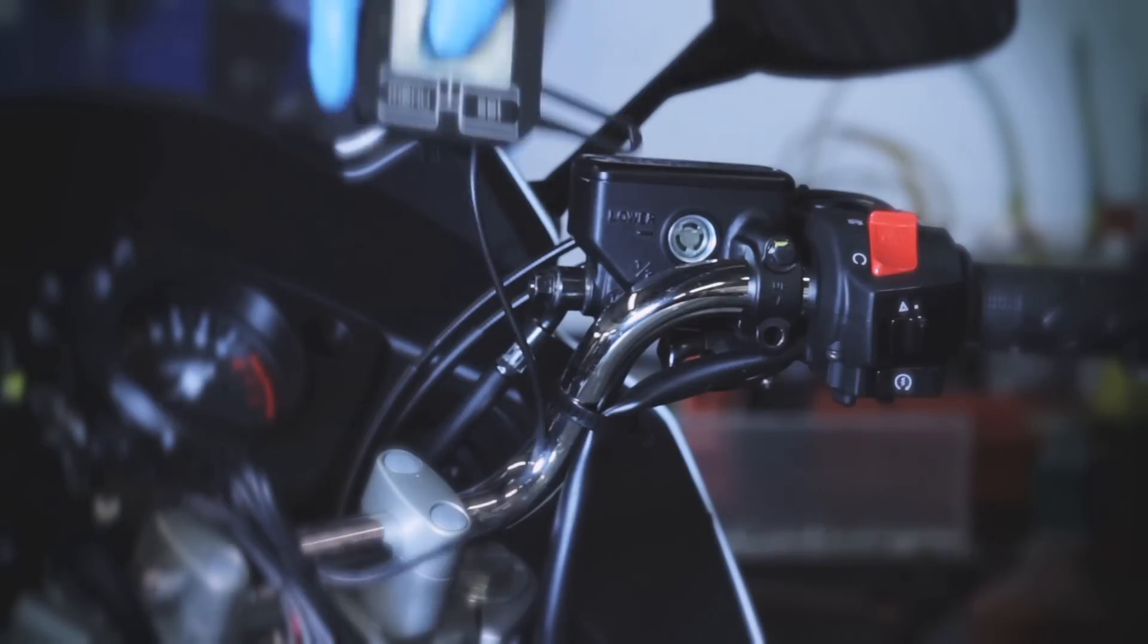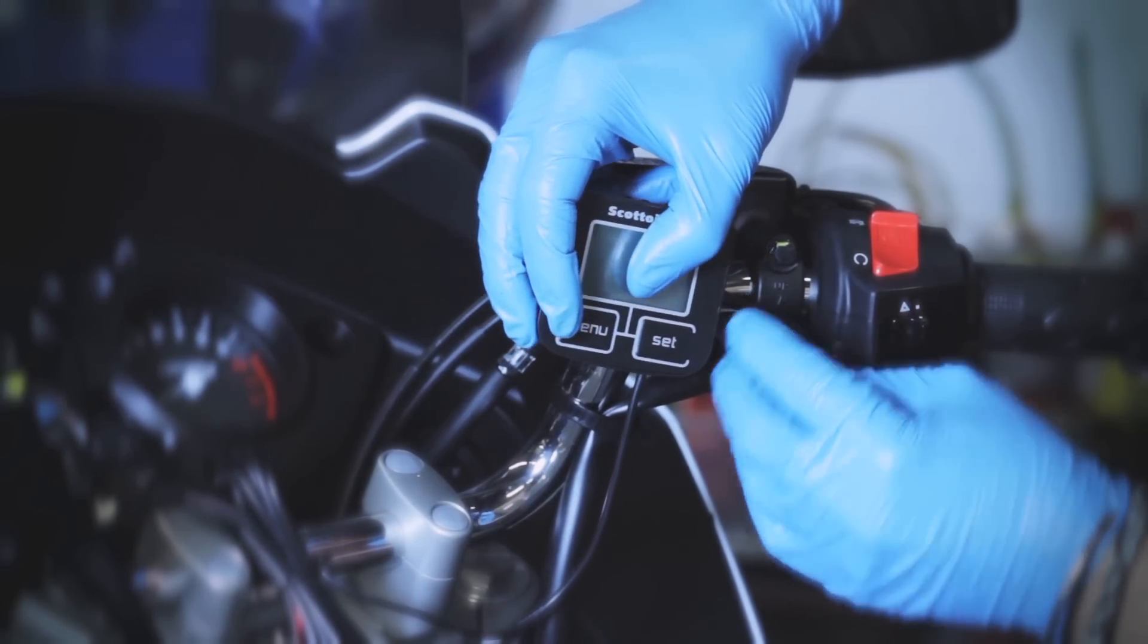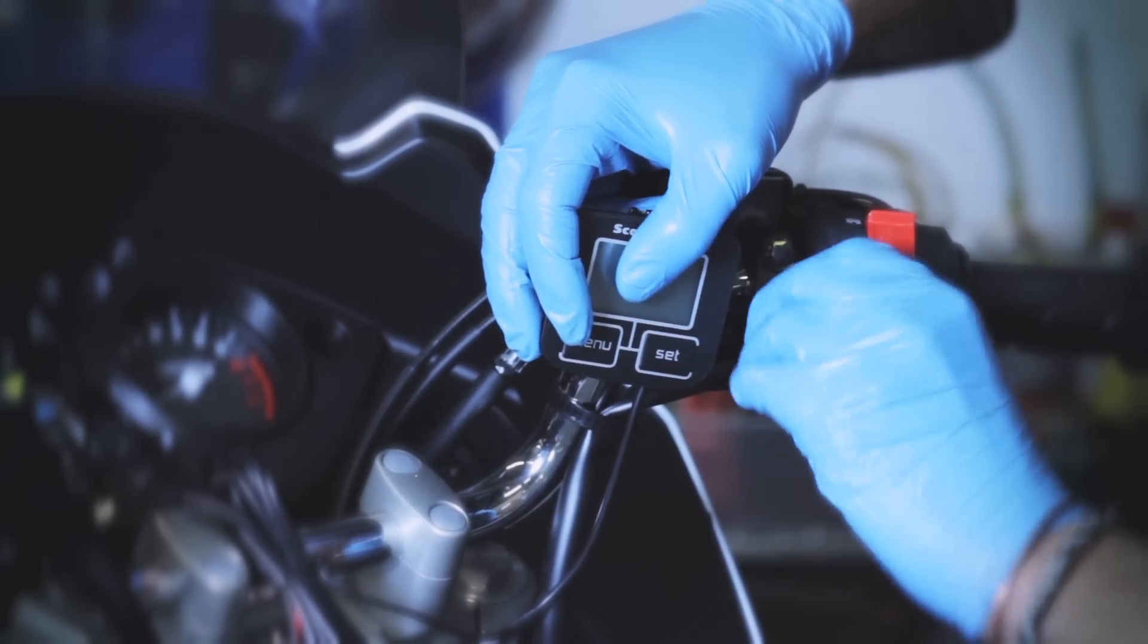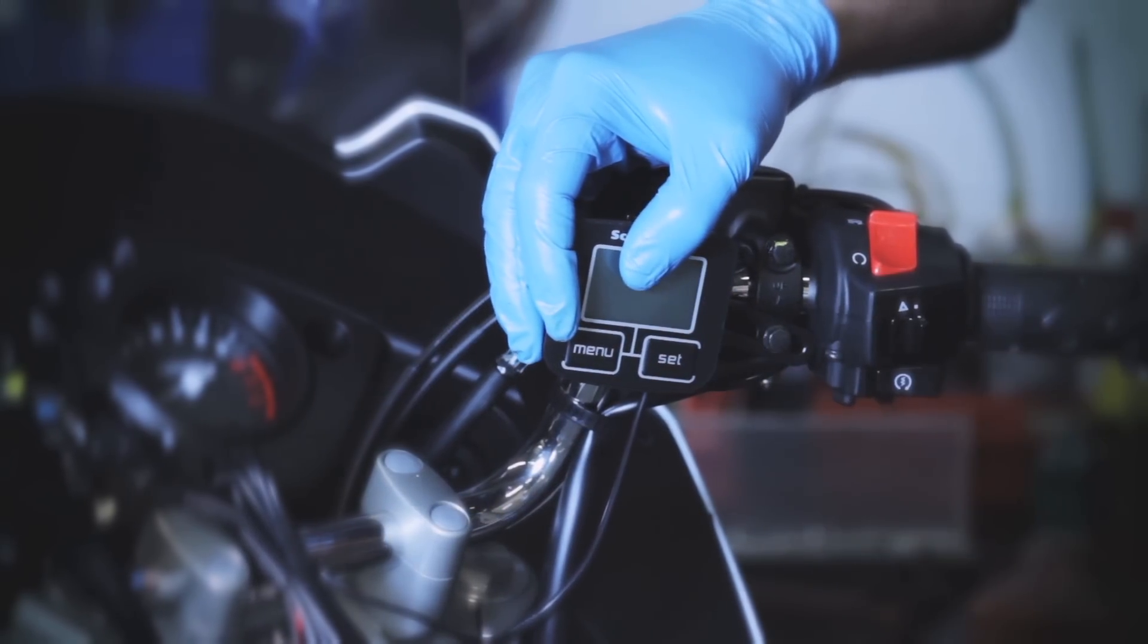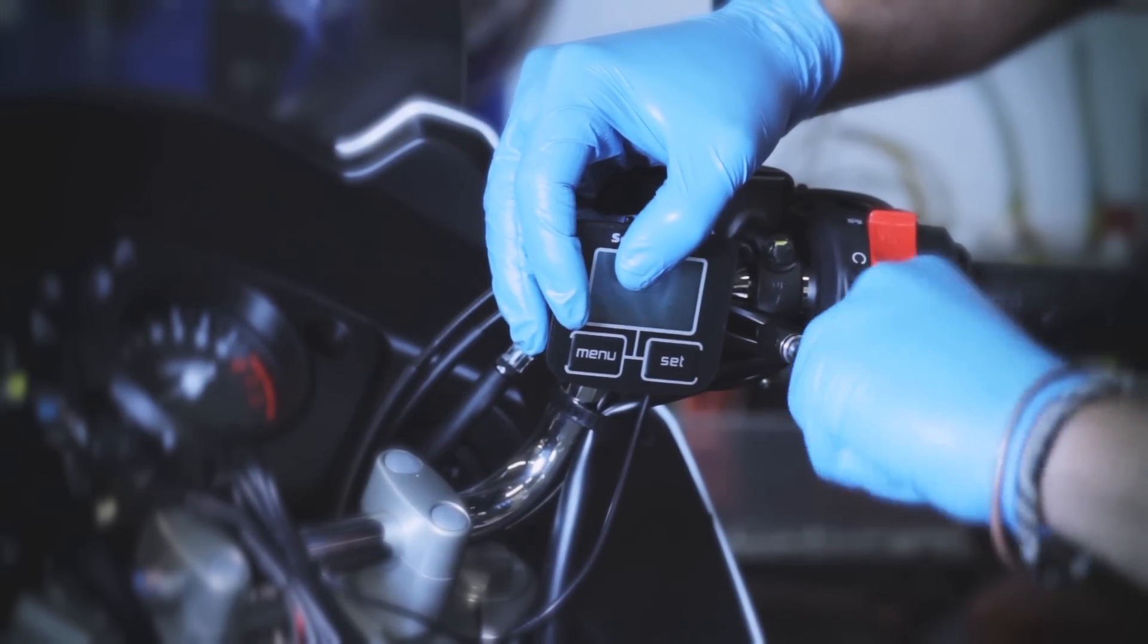The first step is to attach the display unit to your handlebars. This is done by connecting the unit to the bracket using the two self-tapping screws provided. Try to avoid using longer screws as you may compromise waterproofing. Position the bracket where you choose on the bars and secure tightly as shown.